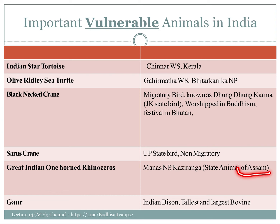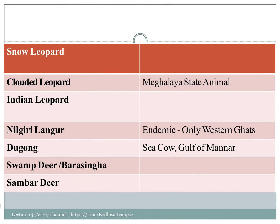The Indian one-horned rhino is found in Assam and UP — it is a big one. Indian bison is the tallest and largest bovine. Snow leopard is also under the vulnerable category. Clouded leopard is Meghalaya's state animal. Indian leopard is also in the vulnerable category. Nilgiri langur is also here. The Dugong is a sea cow — it is a vegetarian found on the continental shelf, feeding on seagrass ecosystems.